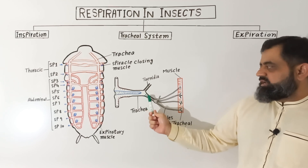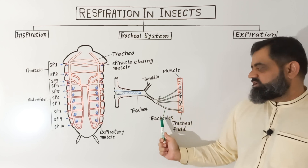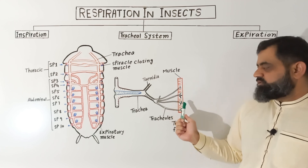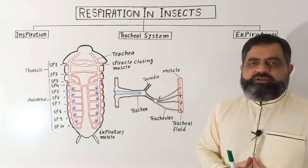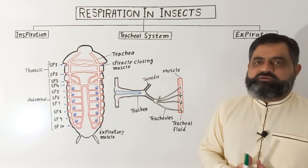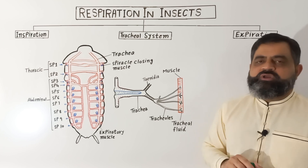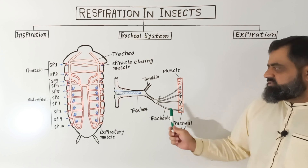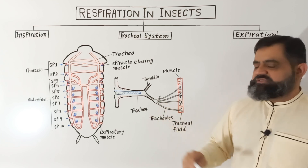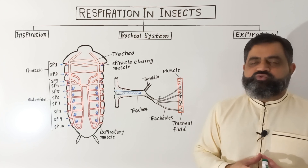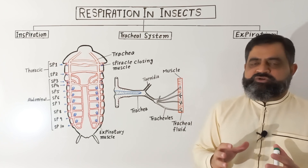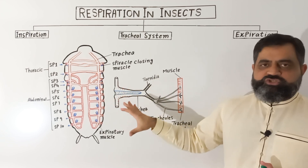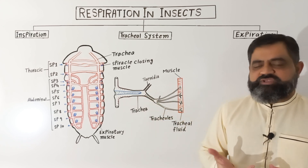This trachea leads into smaller, tinier tubes which are known as tracheoles, which open blind-ended into the tissues and muscles of the body. As you know, their blood is haemocoel. Most of the gases are diffused into the haemocoel, from where gaseous exchange will take place. There is also some fluid present, known as tracheal fluid, inside the tracheoles, which helps to make gaseous exchange easier. This is the anatomy and morphology of the tracheal system present in most insects.